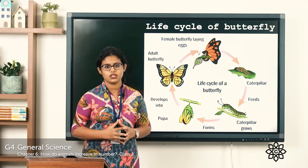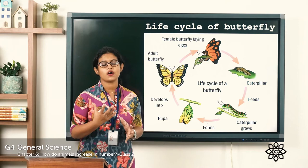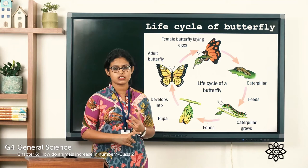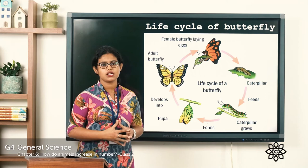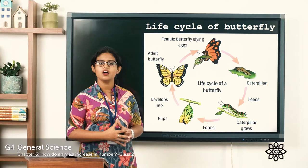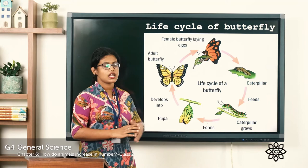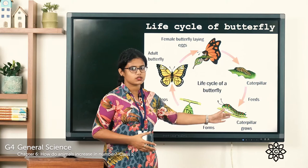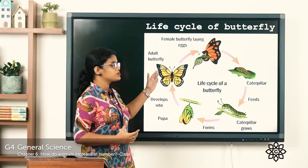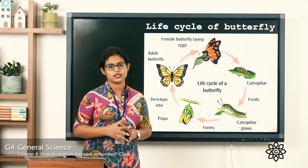When it reaches the adult butterfly stage, it does not grow further. The main job of the adult butterfly is to lay eggs, whereas the main job of the caterpillar was to eat food. So this is the life cycle of a butterfly: starting from an egg laid on plants, hatching into a larva or caterpillar, which feeds on plants, then forming a pupa, and finally developing into an adult butterfly.